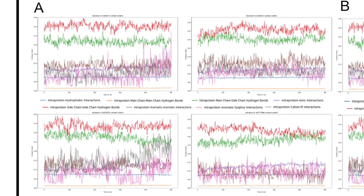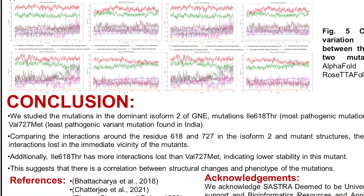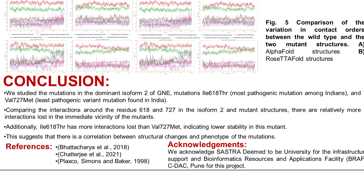Using a first-principle contact order-based method, we also see that certain interactions are significant and certain interactions are not. In conclusion, we studied the mutations of the dominant isoform-2 in the Indian population along with the most and least pathogenic variants. We found that interactions around the residues are different — some interactions lost and some gained — and that isoleucine-618 has more interactions lost than valine-727, indicating a correlation between structural changes and the phenotype of the mutants.